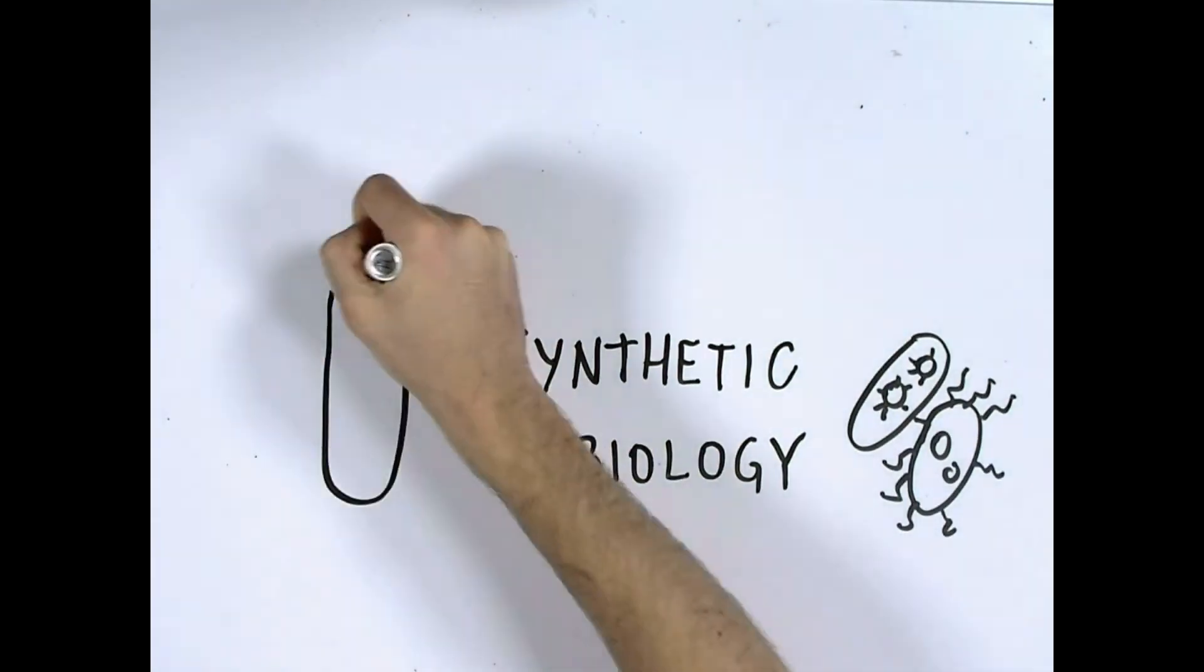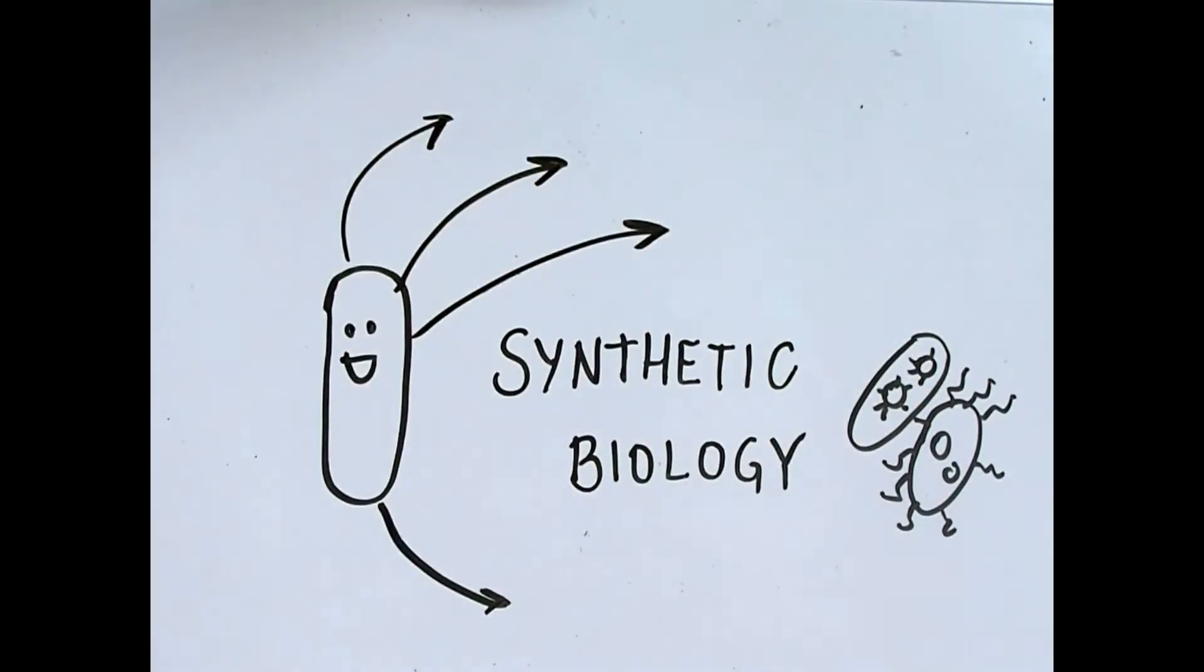Usually this is done by changing things inside a bacterial or eukaryotic cell, known as a biological chassis.